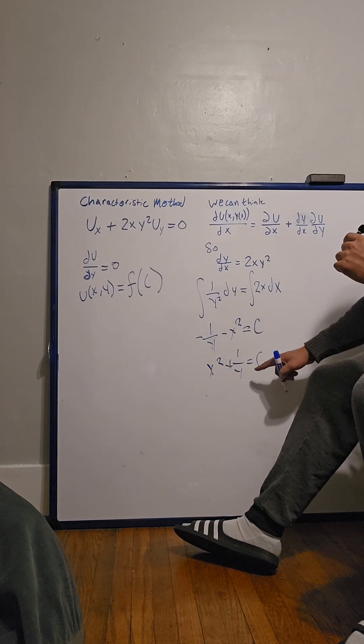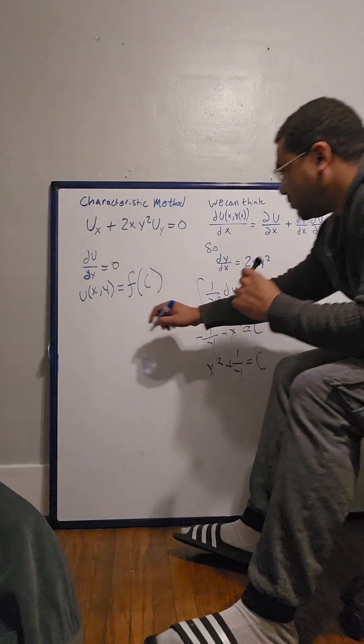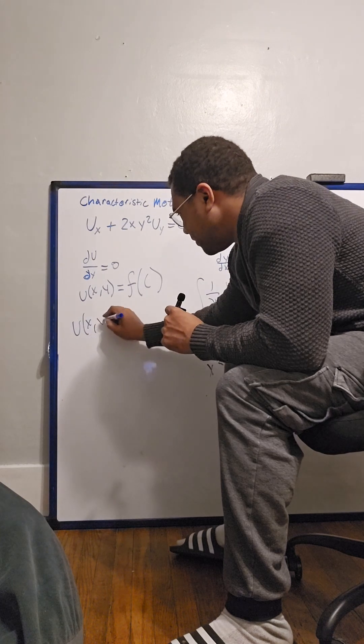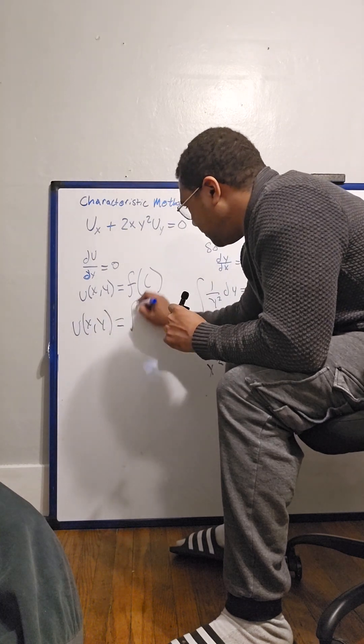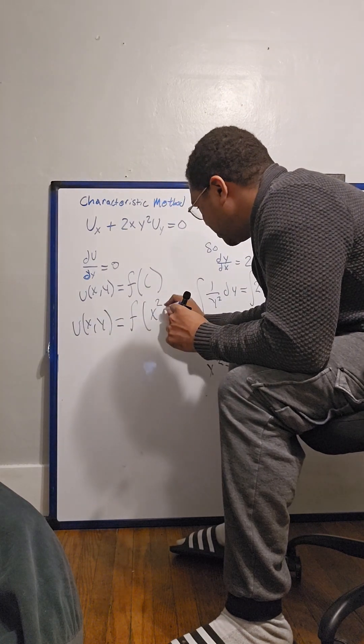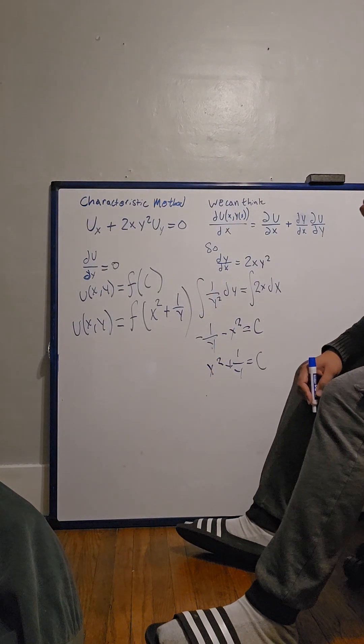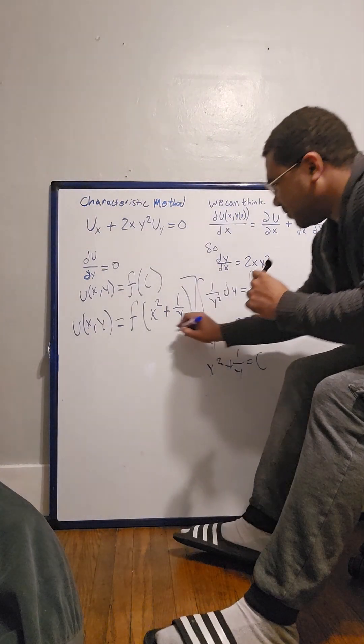So our solution to this differential equation, our general solution, is uxy equals f of x squared plus one over y. And that's our answer.